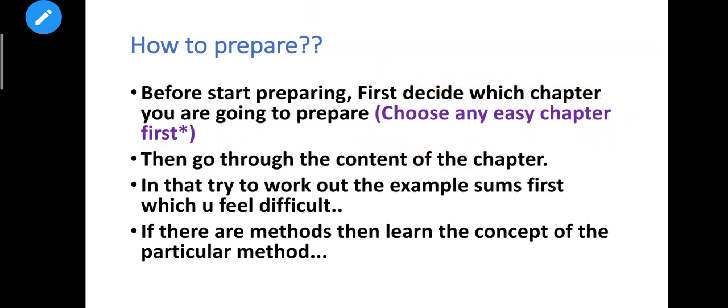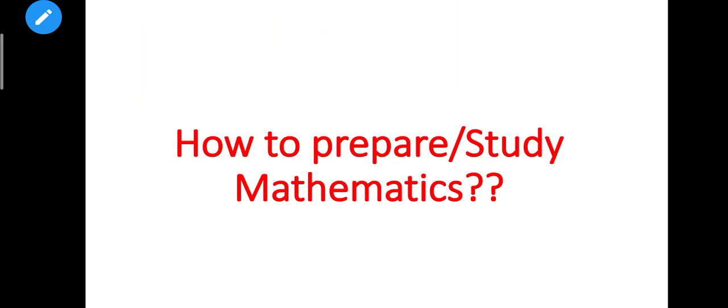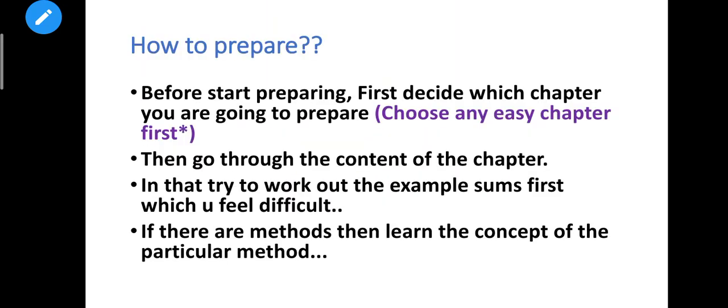Then go through the content of the chapter — what are the headings? For example, if you study the matrix chapter, you will find topics like adjoint, inverse, rank of the matrix, row operations, and different methods like the matrix method. Go through the content of the chapter — this is the second point.